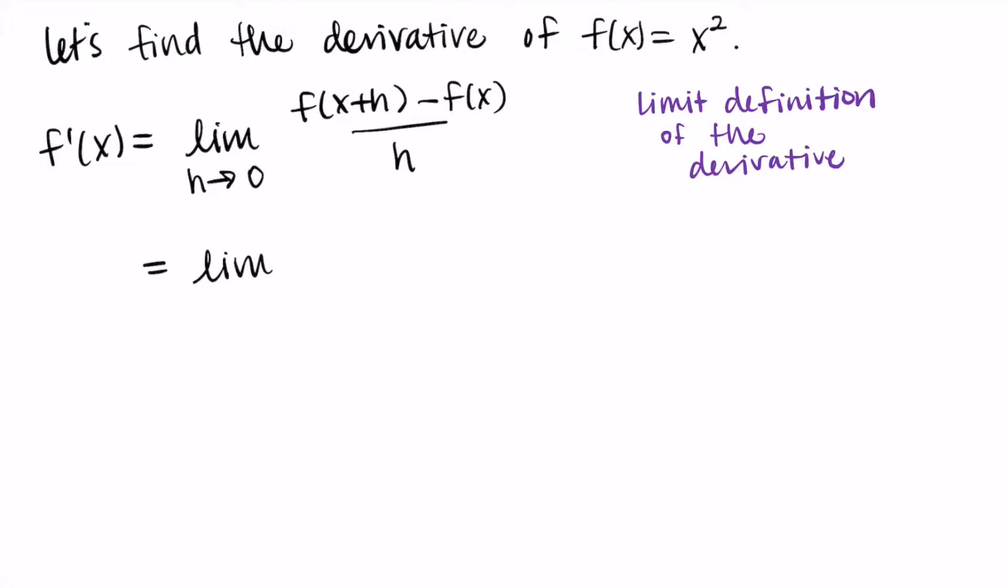For us our function is x squared, so we have x plus h squared minus x squared divided by h. That is our difference quotient that we are going to simplify to find what the derivative is. We're trying to compute what happens as h goes to zero.